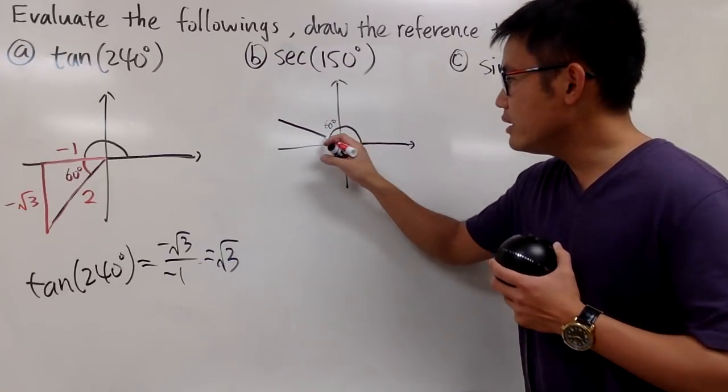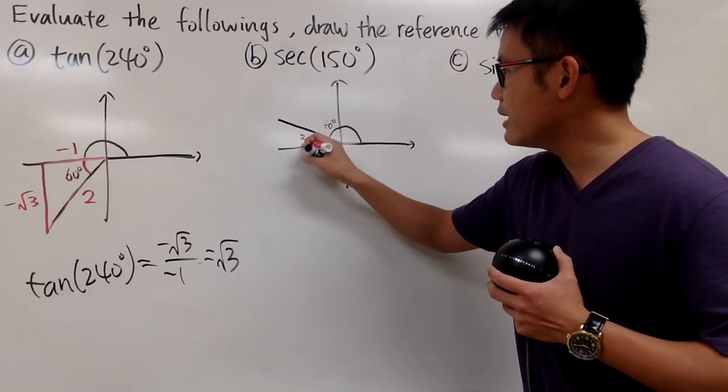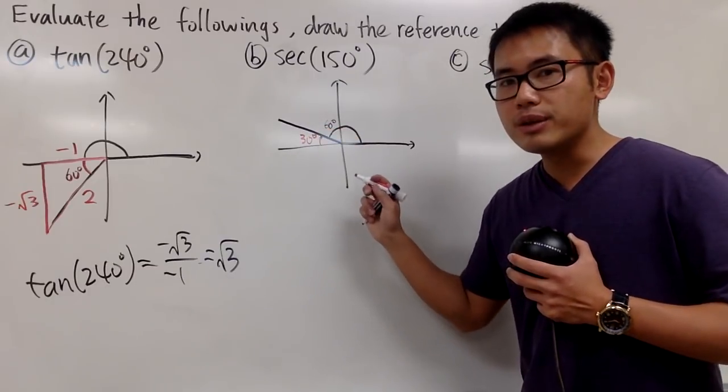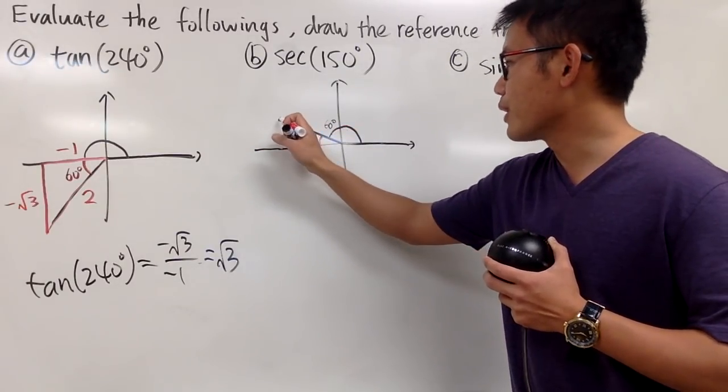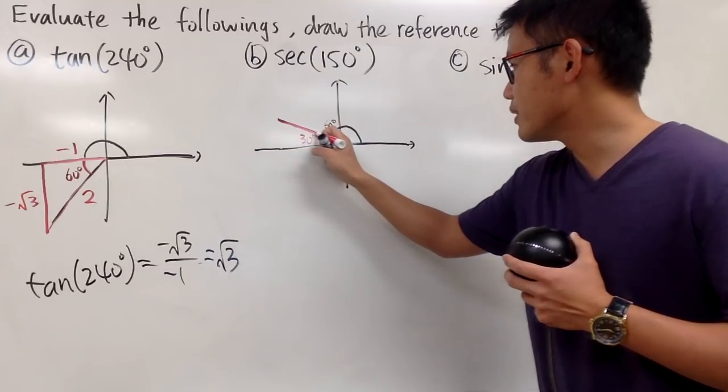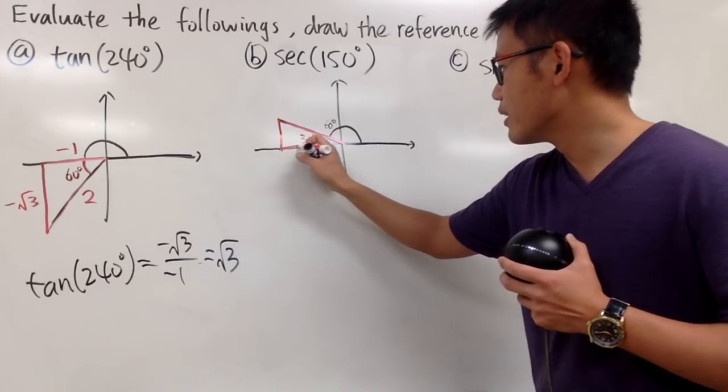Well, we need 30 degrees so we can complete 180. So we know the reference angle in this case is 30 degrees. And we can just put down our right triangle like this. So here is the reference triangle like that.